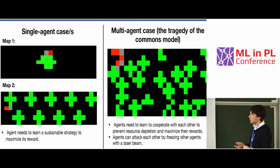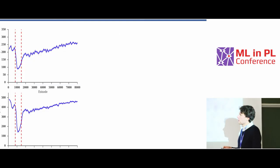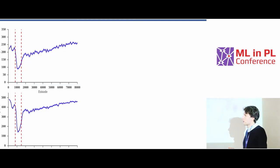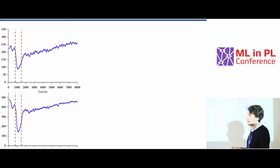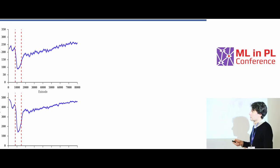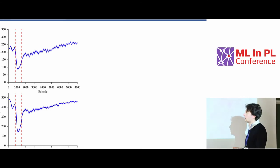Looking at the results, here you can see a not really nice thing, which is this dip. This dip means that at some point, the agents started to fight a lot and collect apples excessively — and this was very bad. So then they realized they needed to bounce back, and became sustainable.